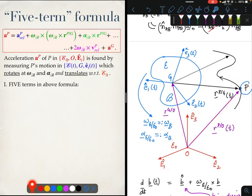And this is done by measuring P's motion in a moving coordinate system, a rotating and moving coordinate system E, which in this figure is also the BFCS of a rigid body B.